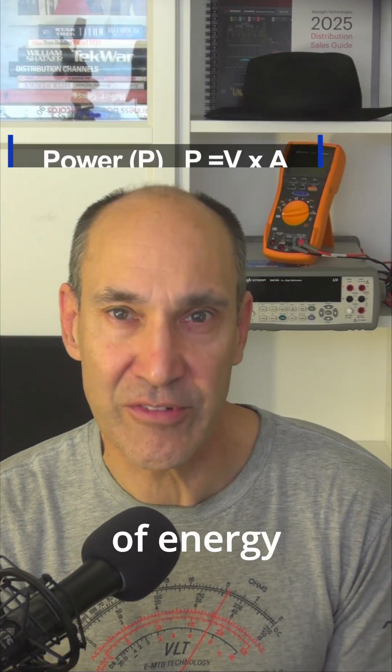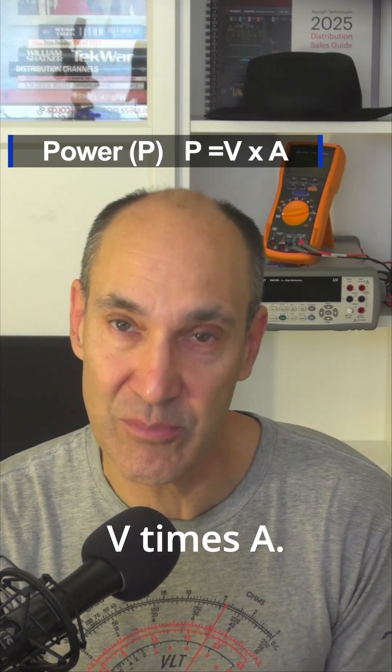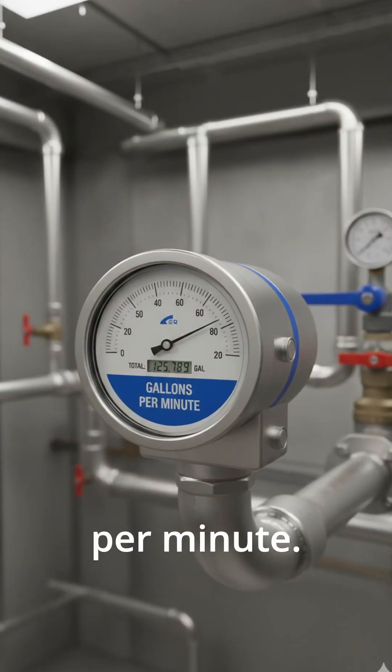Power is the rate of energy transferred. Power is voltage times current, or P equals V times A. In water terms it's like gallons per minute.